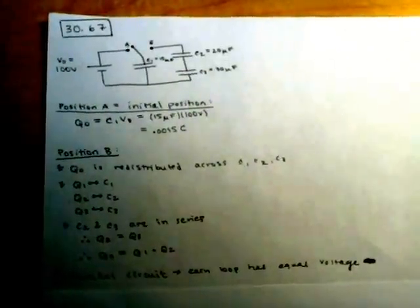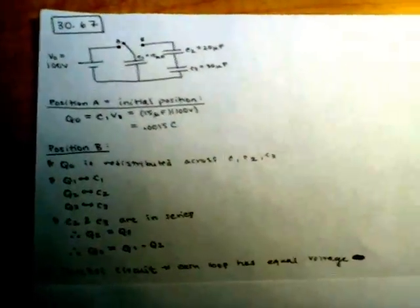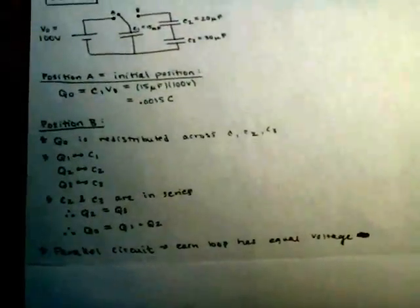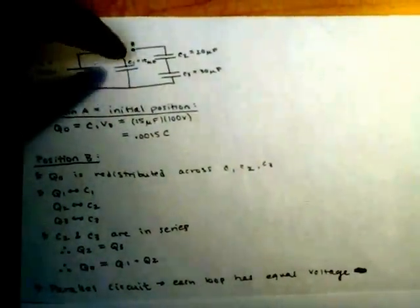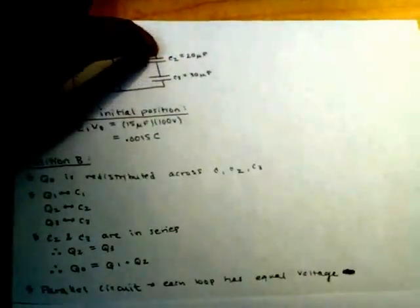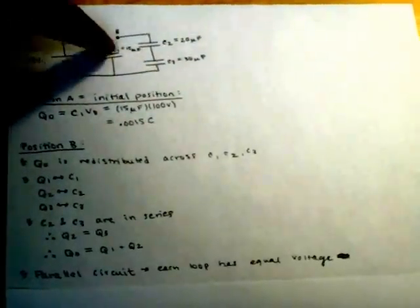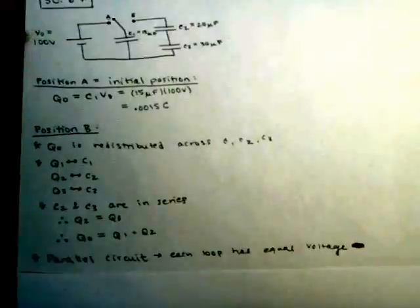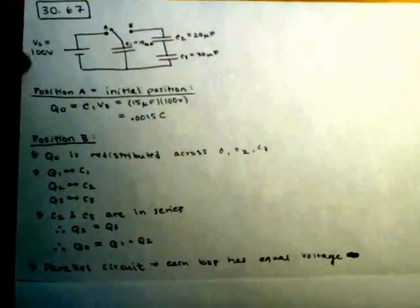Okay, so this is question 30.67 from our textbook. It asks us to find the voltage and charge of each of these capacitors: capacitor 1, capacitor 2, and capacitor 3, of 15 microfarads, 20 microfarads, and 30 microfarads, which have a voltage supply of 100 volts.